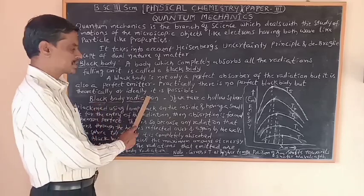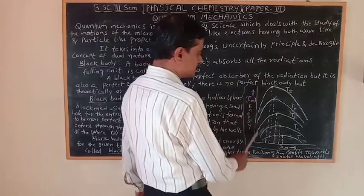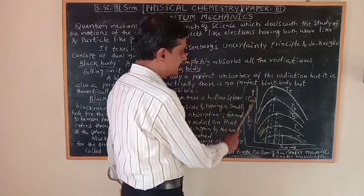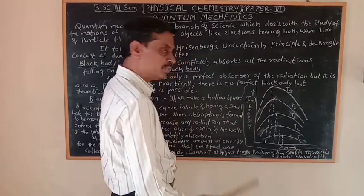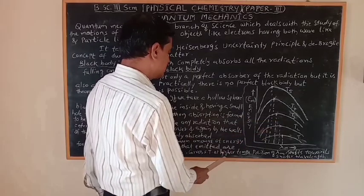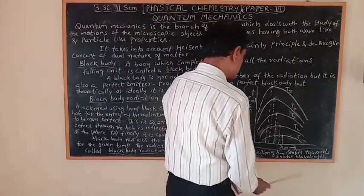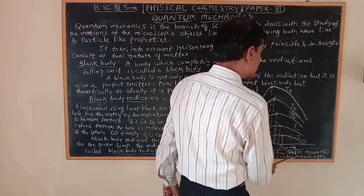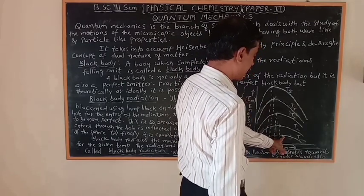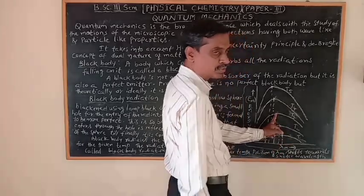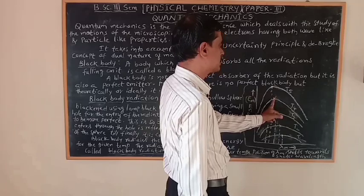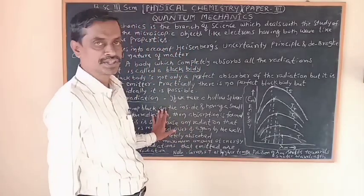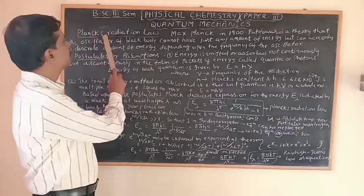The black body radiation can be clearly explained using a graph, with wavelength lambda m along the x-axis and energy along the y-axis. The important observation is that at higher temperatures, the position of lambda m on the x-axis shifts towards shorter wavelengths. So T1, T2, T3, T4, and T5 each shift progressively towards shorter wavelengths. This is the key observation about black body radiation.